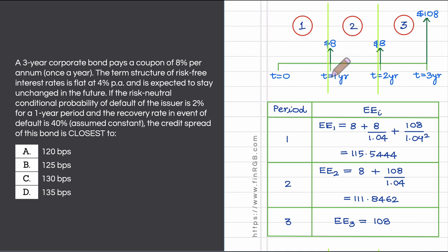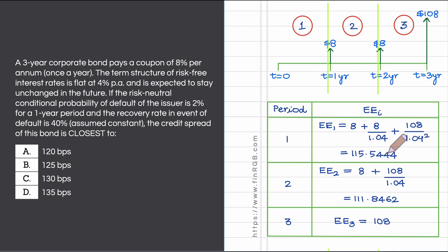If I place myself at t = 1 year, just before the corporate bond pays its promised coupon of $8, the risk-free value is simply the discounted value of all future cash flows, discounted at the risk-free rate of 4%. This gives a future value of 115.5444. The exposure is max(0, 115.5444), so exposure is also 115.5444, and since there is no variability, the expected exposure also equals 115.5444.